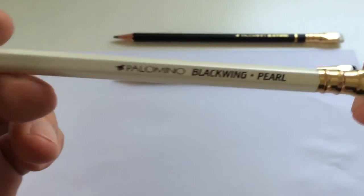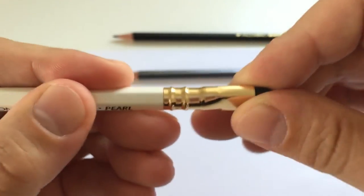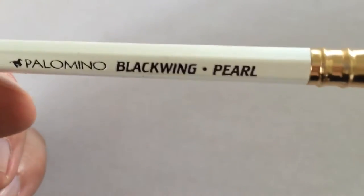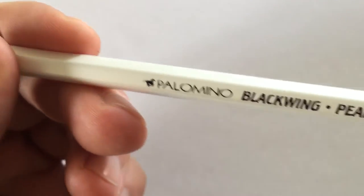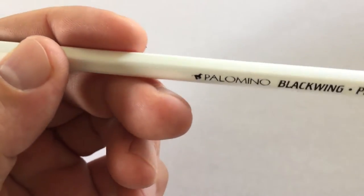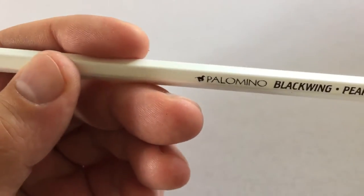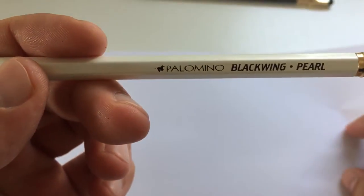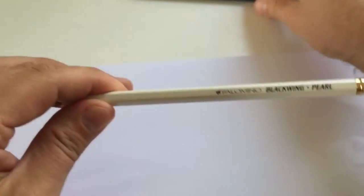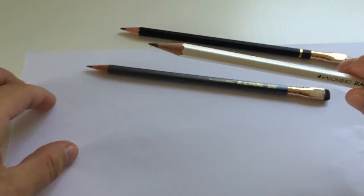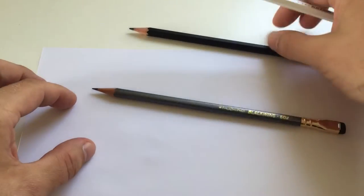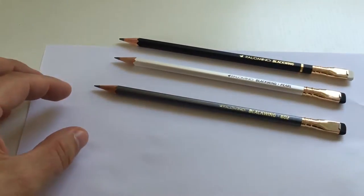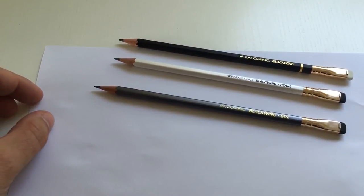Last but not least, we have the Pearl. Same ferrule thing going on here, saying Palomino Blackwing Pearl. It's not white - I mean it is white, but it has a slight sheen on it. So it really looks a little bit like a pearl. Pearl is probably a good name for it because it sort of reflects the color of that pencil pretty well. That one has a graphite lead that is not as firm as the 602 and not as soft as the regular Blackwing, so it comes exactly in the middle.